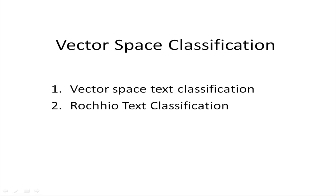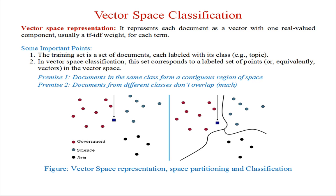In this lecture, I will consider vector space text classification. In the vector space representation model, we represent entire documents in the form of rows and columns, where each row represents a document and each column represents a word.